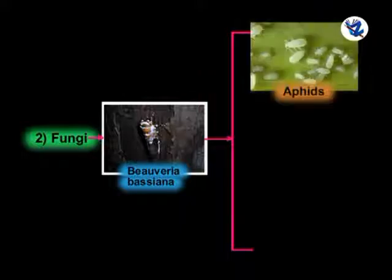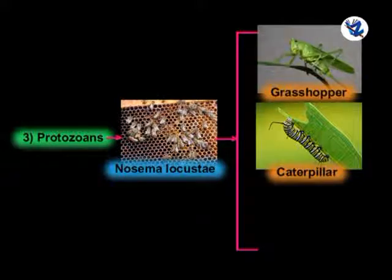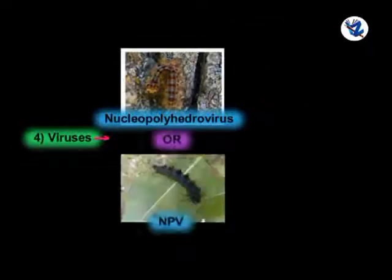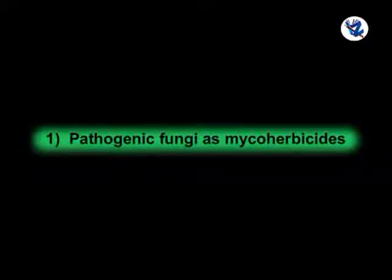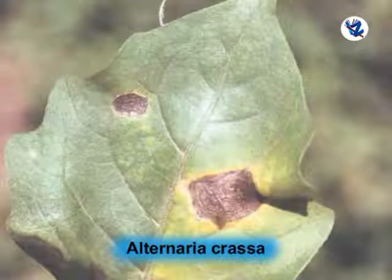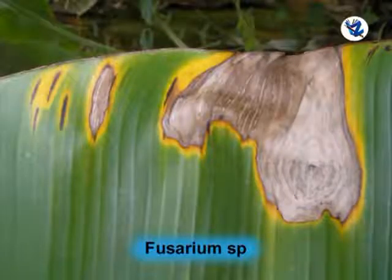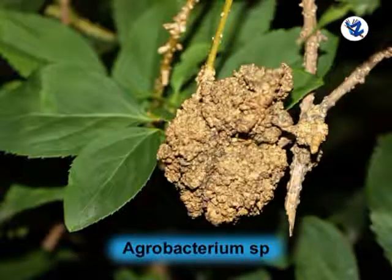For fungi, Beauveria bassiana targets aphids, mealybugs, and mites. For protozoans, Nosema locustae targets grasshoppers, caterpillars, and some corn borers. For viruses, nucleopolyhedrovirus (NPV) targets gypsy moths and caterpillars. Microbial herbicides include pathogenic fungi such as Phytophthora palmivora, Alternaria crassa, and Fusarium sp., and bacterial pathogens such as Pseudomonas sp., Xanthomonas sp., and Agrobacterium sp.